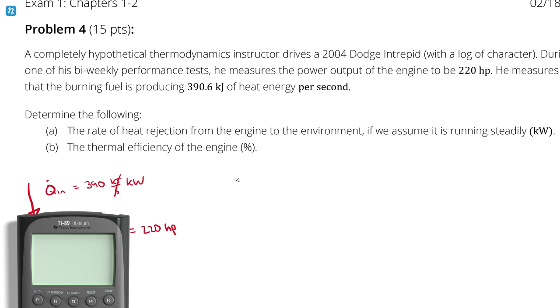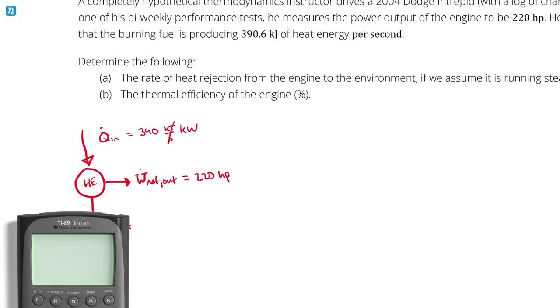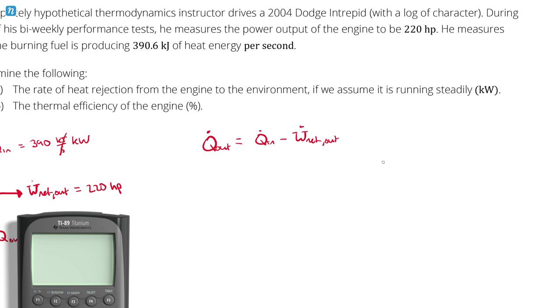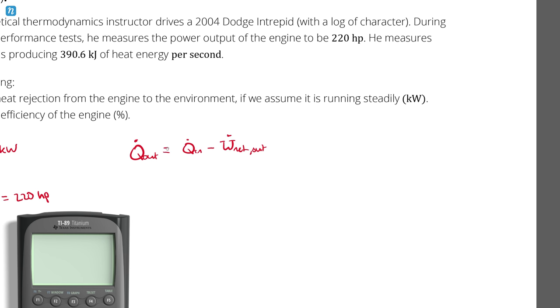So I could figure out Q out by recognizing that Q out is just whatever heat didn't get turned into work. So my Q out, which is what I'm looking for for the answer to part A, is Q in, or Q dot in, minus my net power output. And I got this by looking at the heat engine diagram over here. But I also could have come up with it by doing an energy balance. That's what this is.